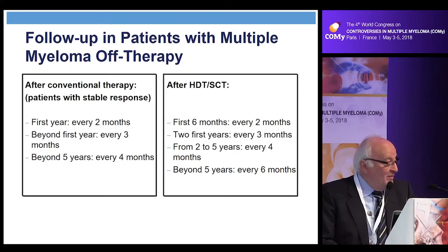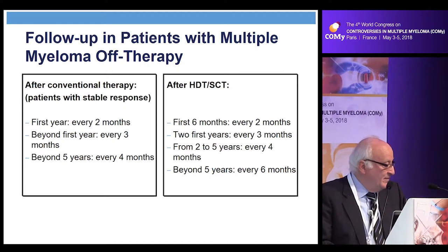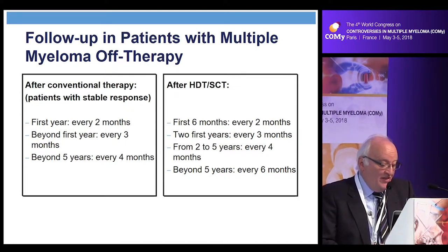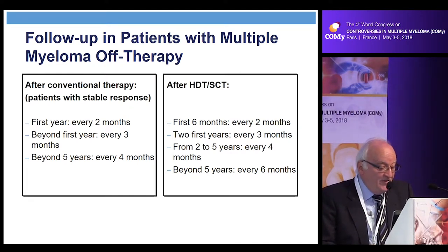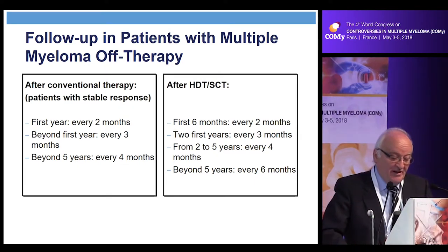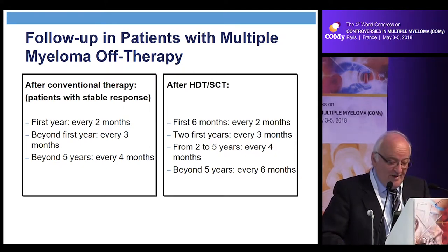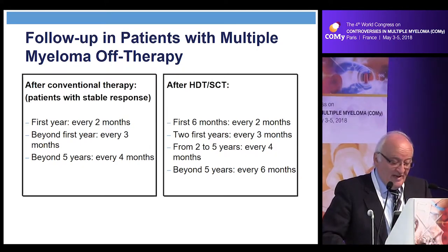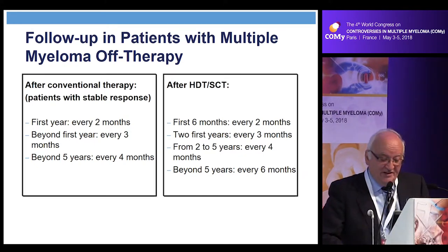For follow-up in patients off therapy who receive conventional therapy and remain in stable response: during the first year, see the patient every two months; beyond the first year, every three months; beyond five years, every four months. After high dose therapy and stem cell transplant: during the first six months post-transplant, every two months; for two more years, every three months; from two to five years, every four months; and beyond five years, every six months.